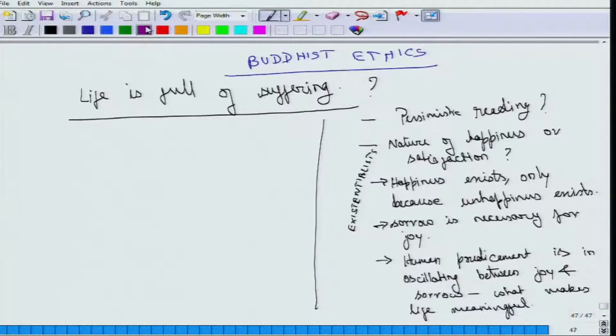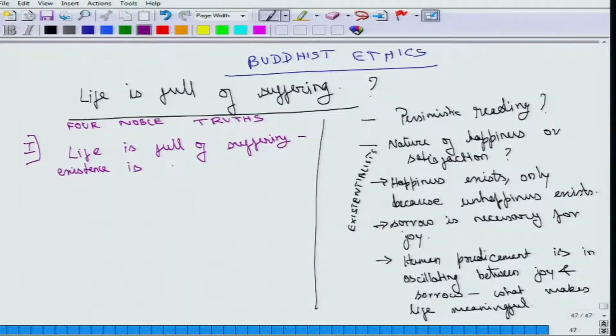That there is suffering. This comes out to be the first of the four noble truths, as popularly regarded. The first noble truth is that life is full of suffering. Or your existence is Dukkha, as it is regarded. What is the meaning of Dukkha? Dukkha would mean sorrow in the psychological sense. But at a deeper sense it would mean impermanence.